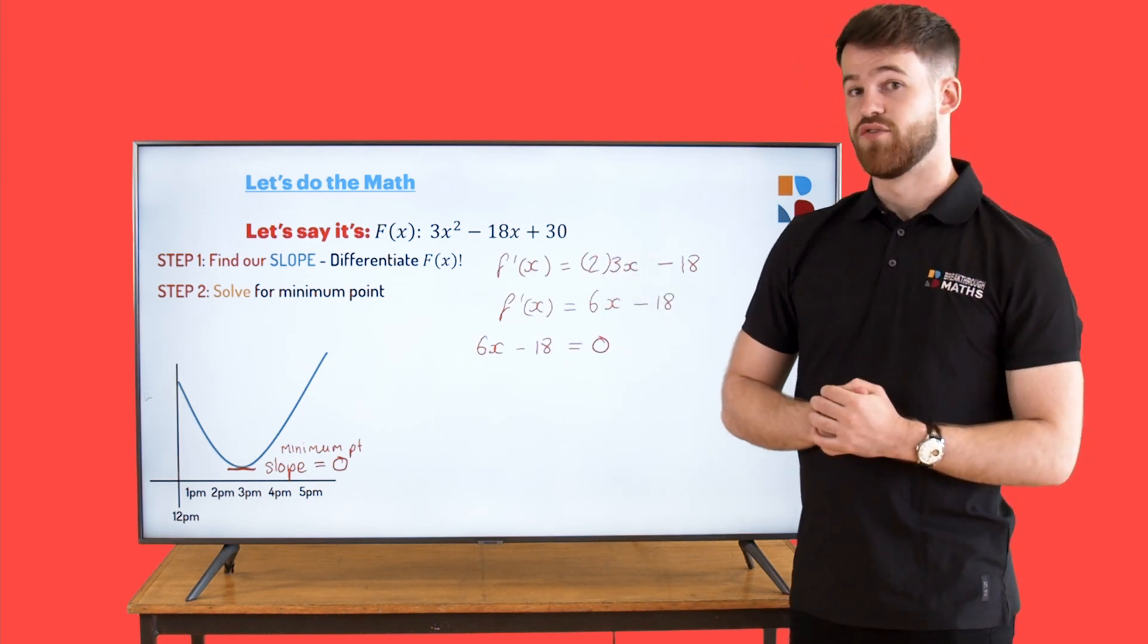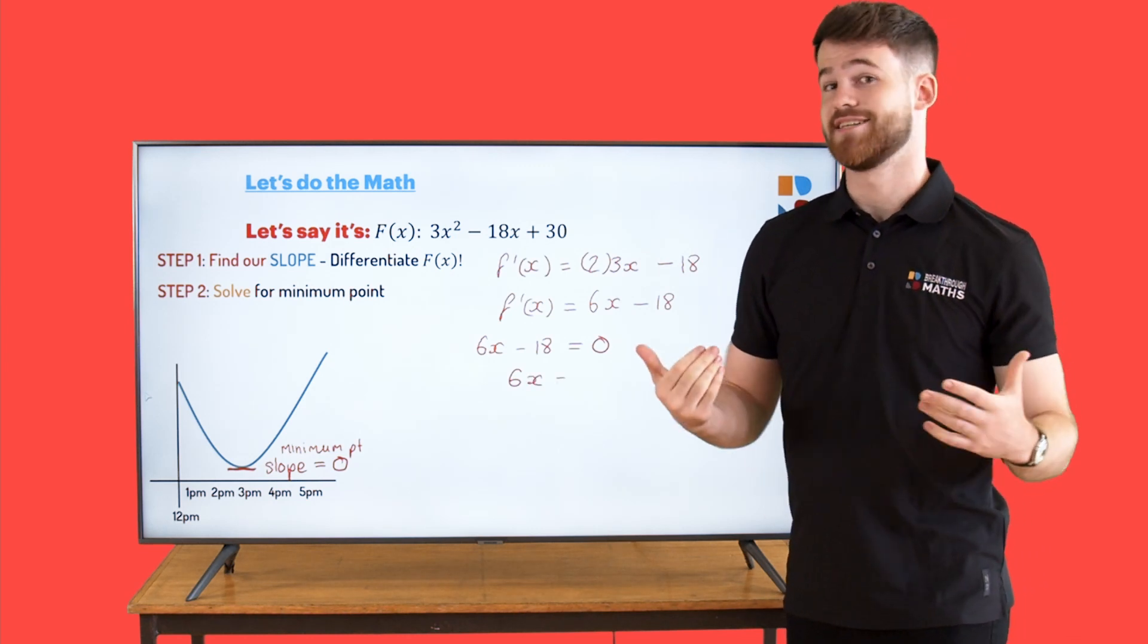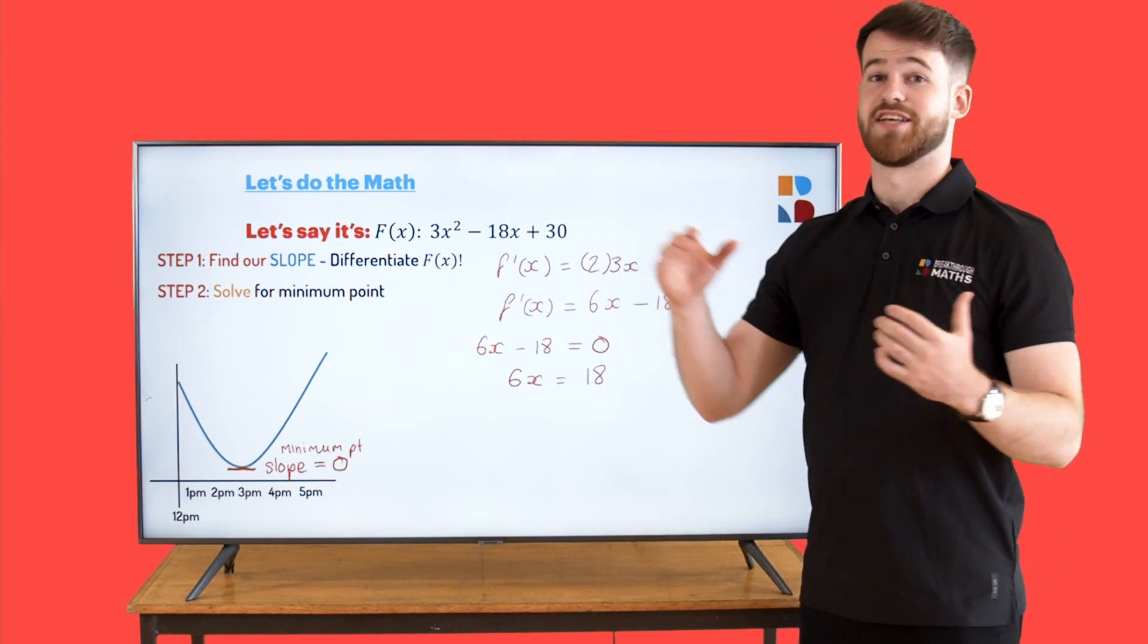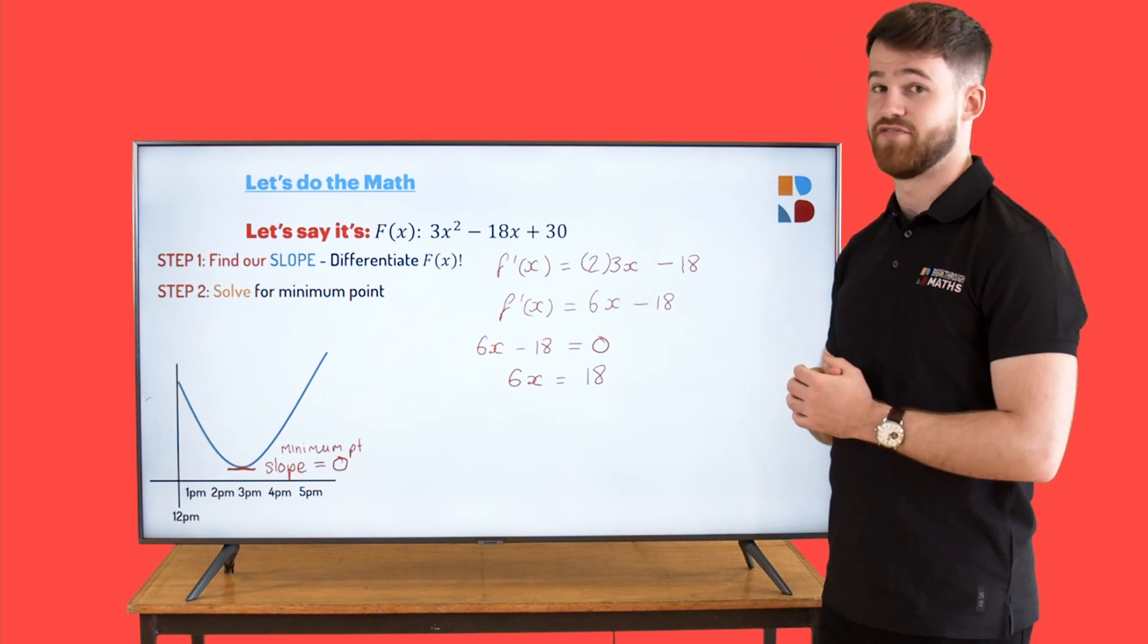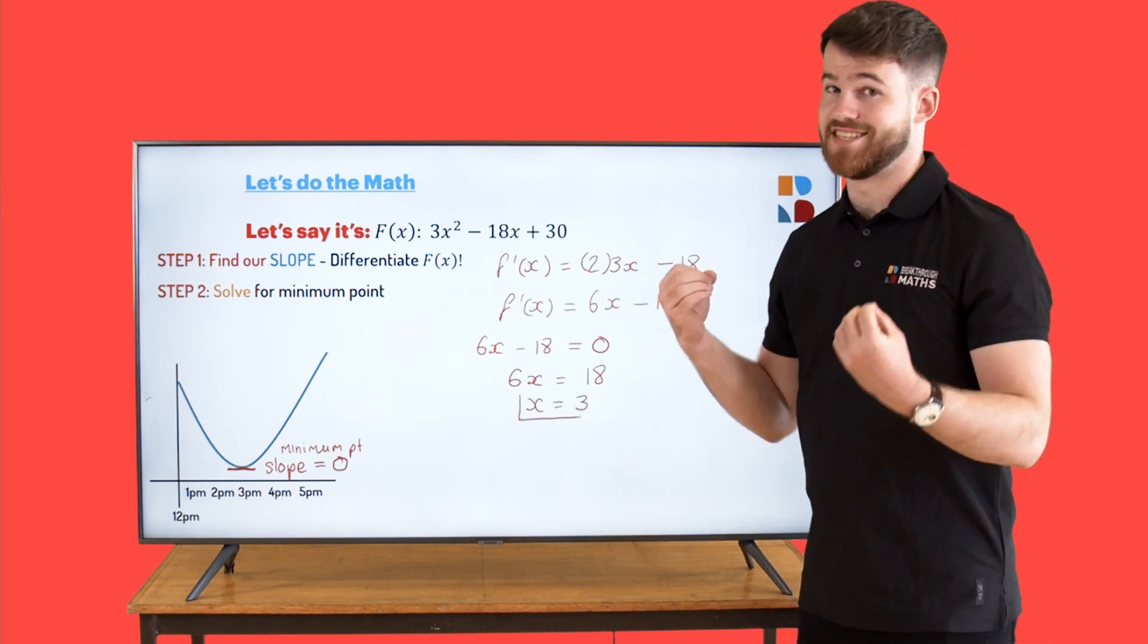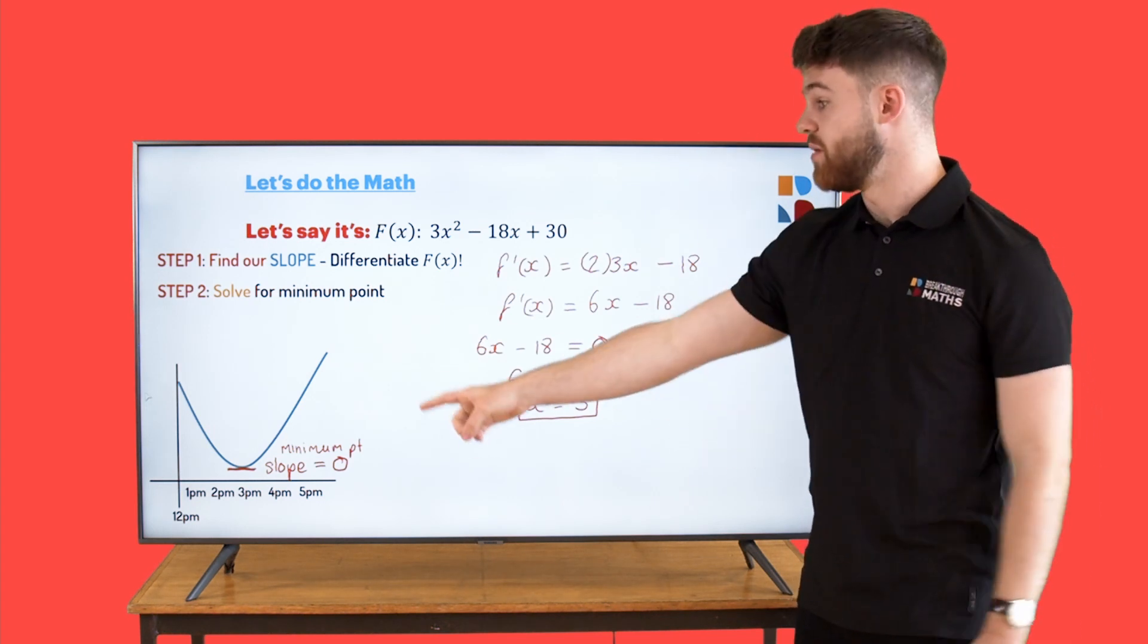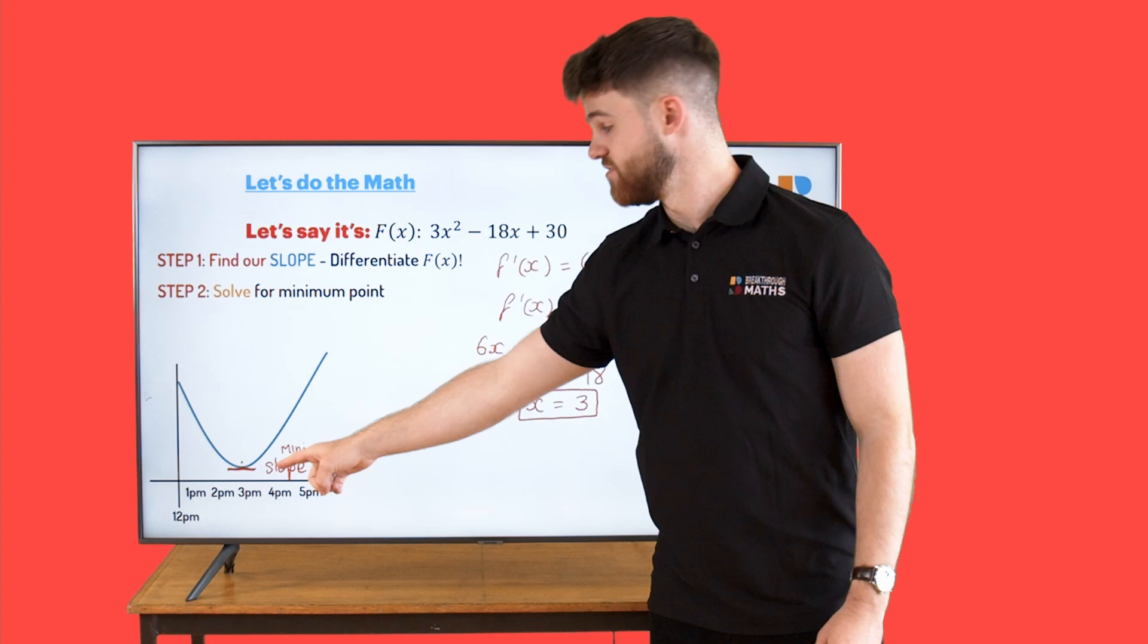Bring the minus 18 over to the other side and we're going to have 6x = 18. And then divide by 6 and we're going to be left with x = 3. x = 3 then is the x coordinate of our minimum point on the graph.